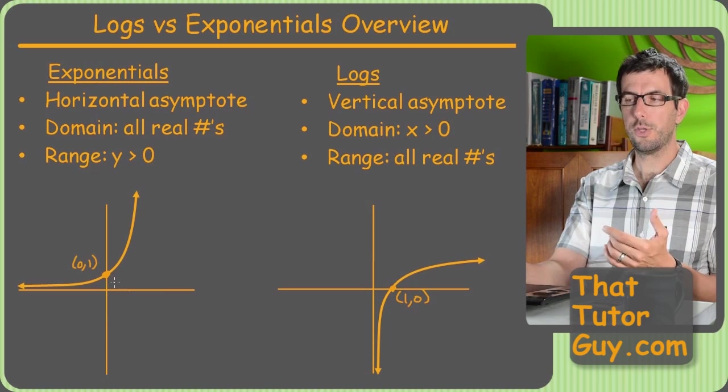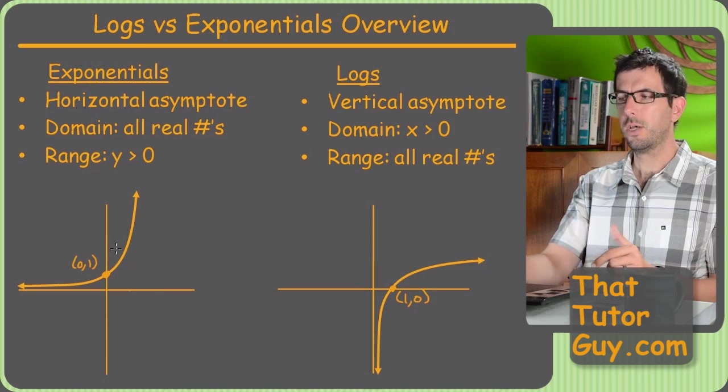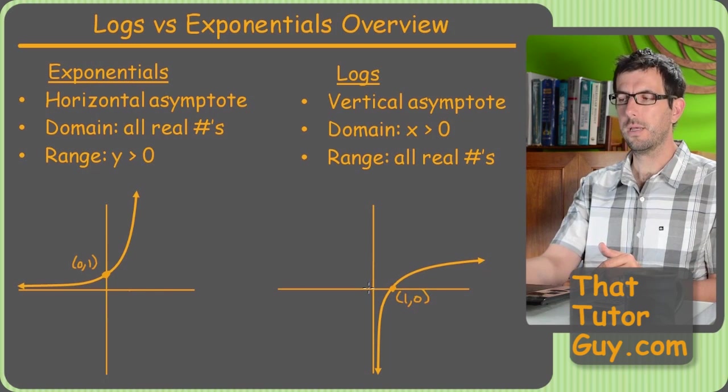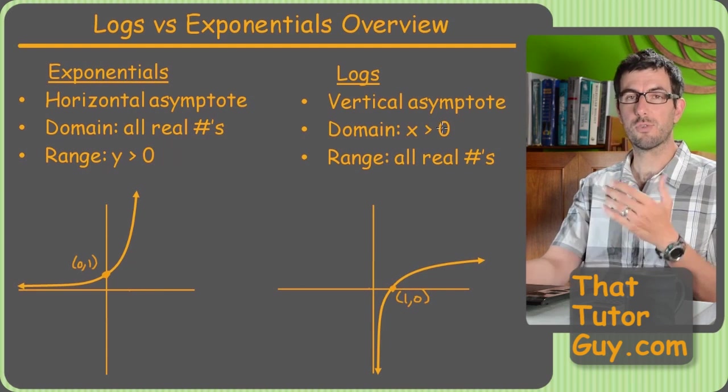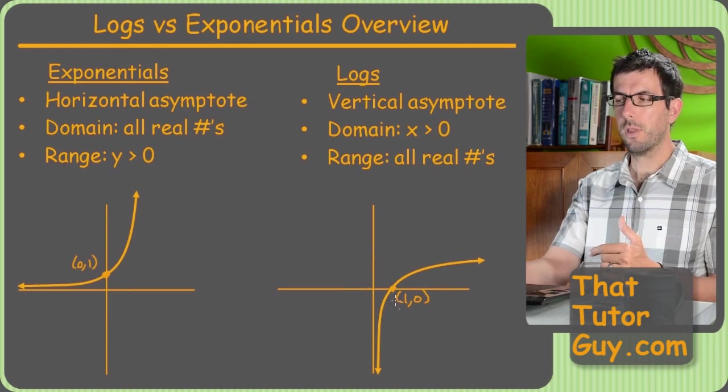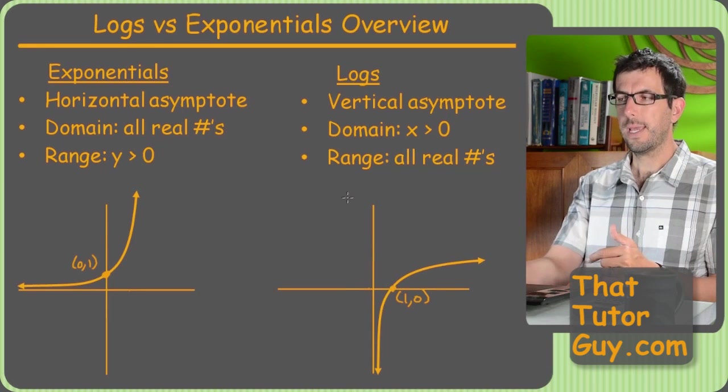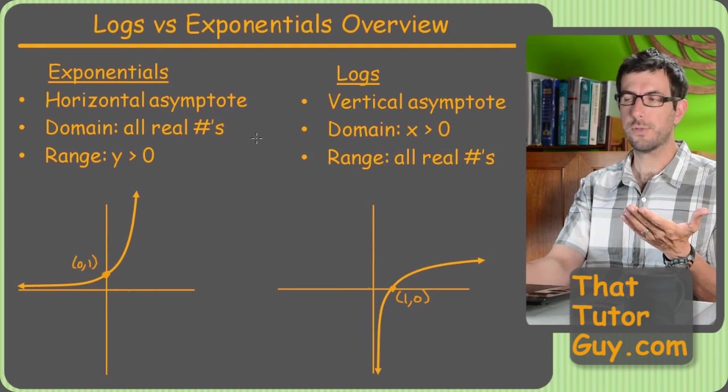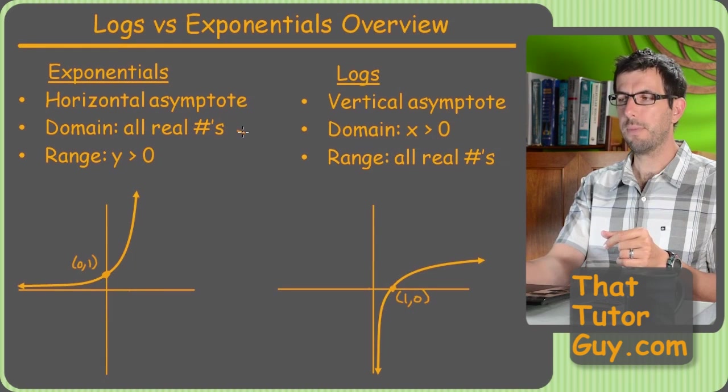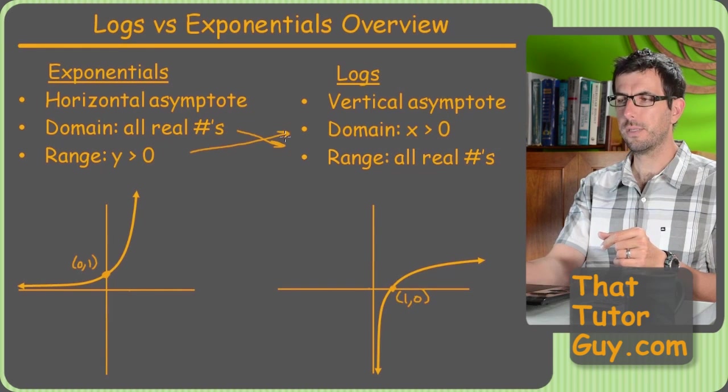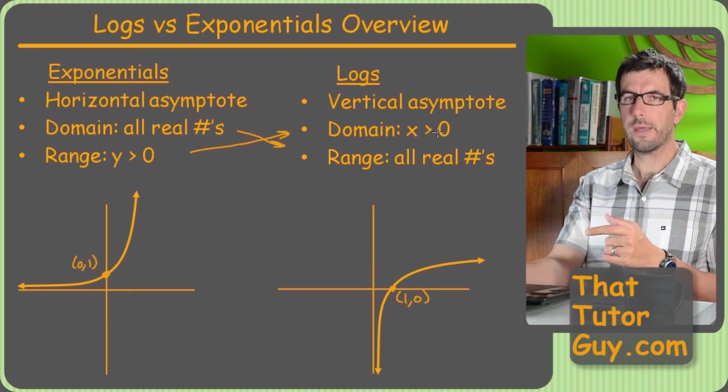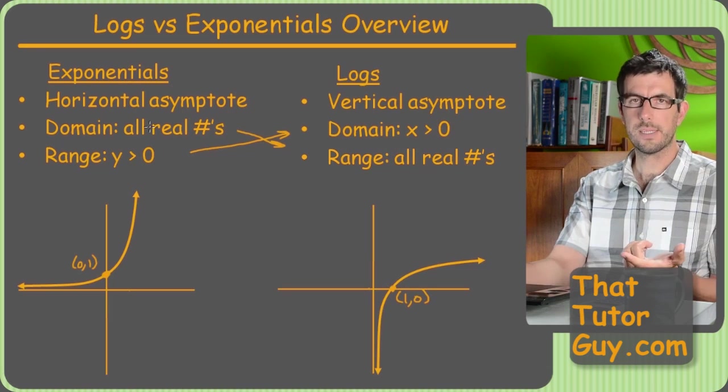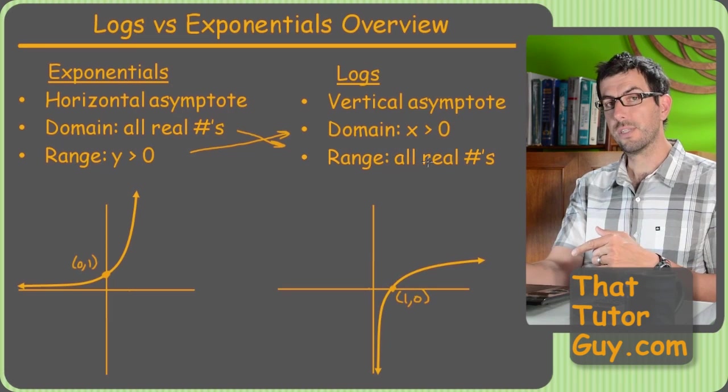And just as a reminder, the domain of exponentials is all real numbers, whereas you cannot take the log of 0 or a negative number. So that's why the domain is only x > 0 for logs. And because these things are inverses of each other, that's why the domain and range just flip between the two. So y > 0 for the range of this one is the domain of the other one, and all real numbers for the domain of this guy, all real numbers for the range of this guy.